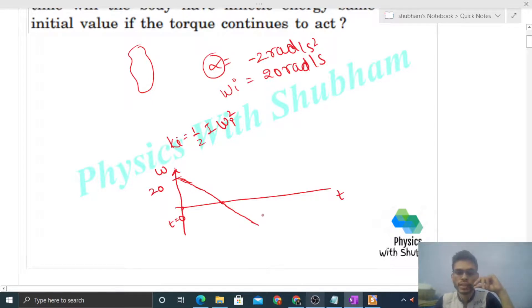It means omega increases in the negative direction, right? And a time will come when again omega will become minus 20. So at that time, again kinetic energy will be same, because kinetic energy depends on omega square. So 20 square is same as minus 20 square, right?